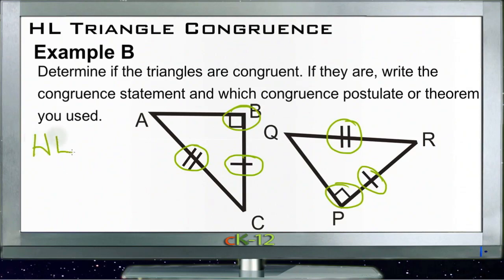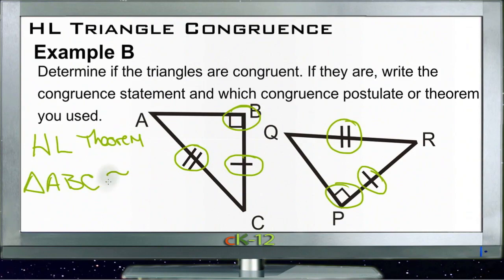The HL theorem will work, and then we can say that triangle ABC is congruent to triangle QRP.